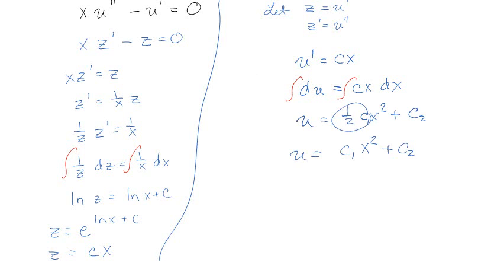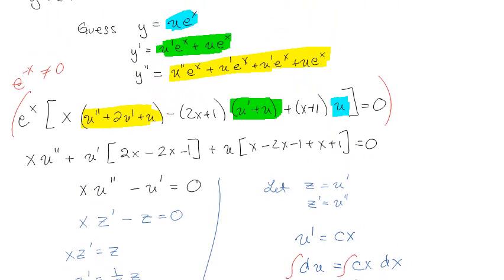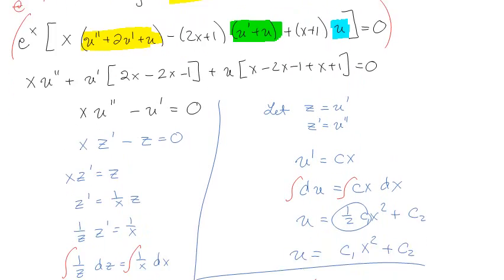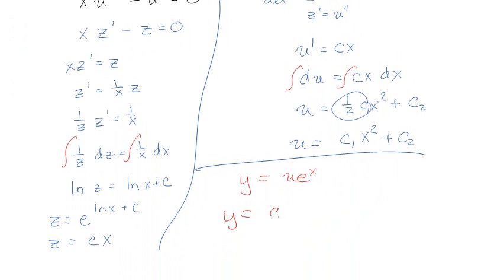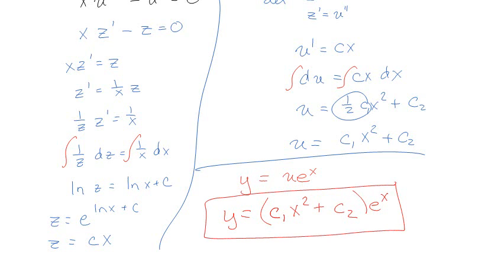Now if you'll remember in our original problem, we guessed that y, our full solution, was equal to u times e^x. That was way up there. So now all we have to do is apply the new u that we found: (c₁x² + c₂)·e^x.